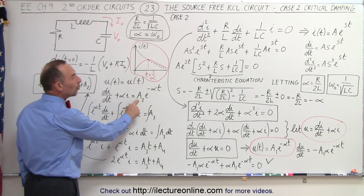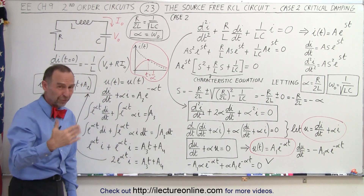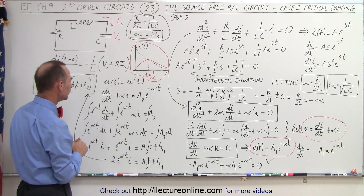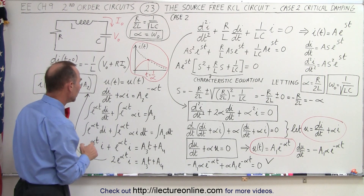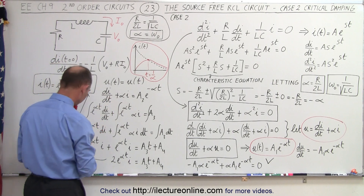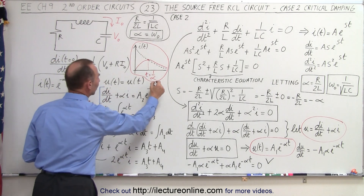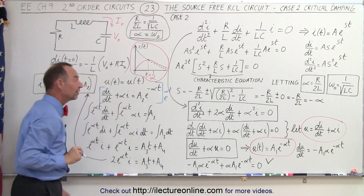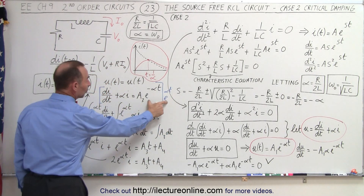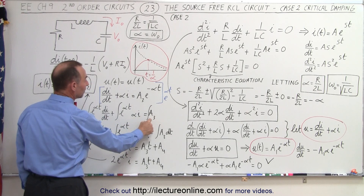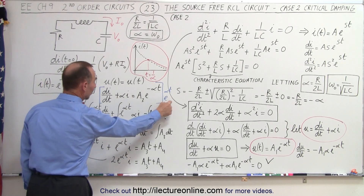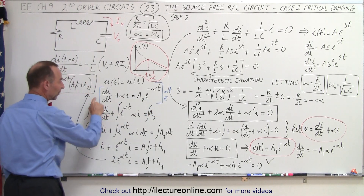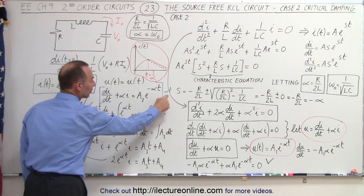The next thing we're going to do is multiply both sides of the equation by e to the positive alpha t. On the left side, the e^(-αt) and e^(αt) cancel, leaving just A₃. On the right side, the e^(-αt) multiplied by e^(αt) gives us the combined expression. So we simply multiply both sides of the equation by e to the alpha t.